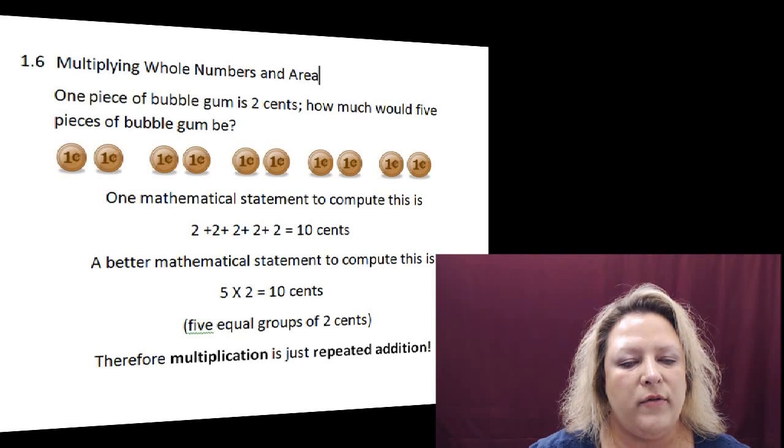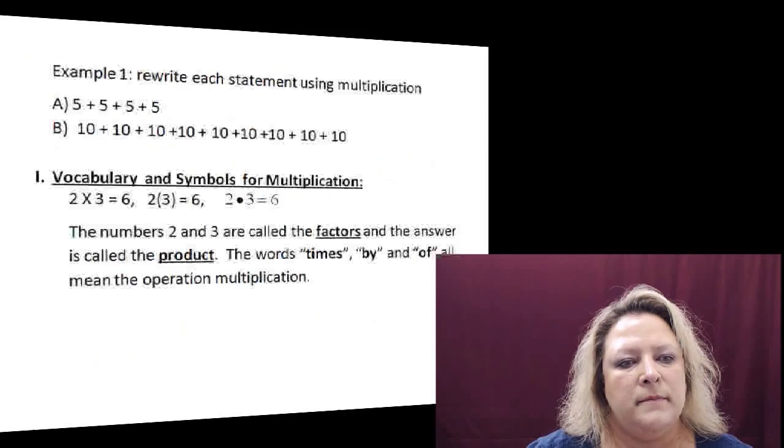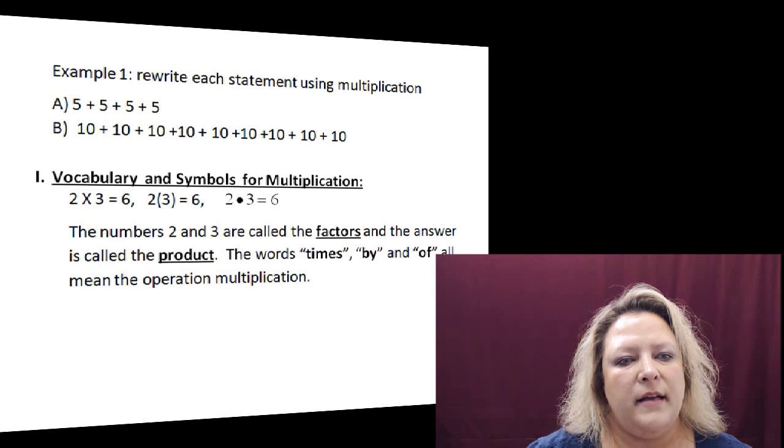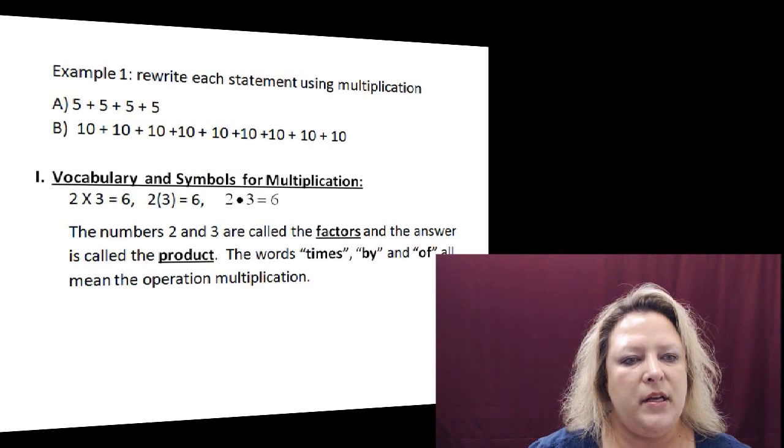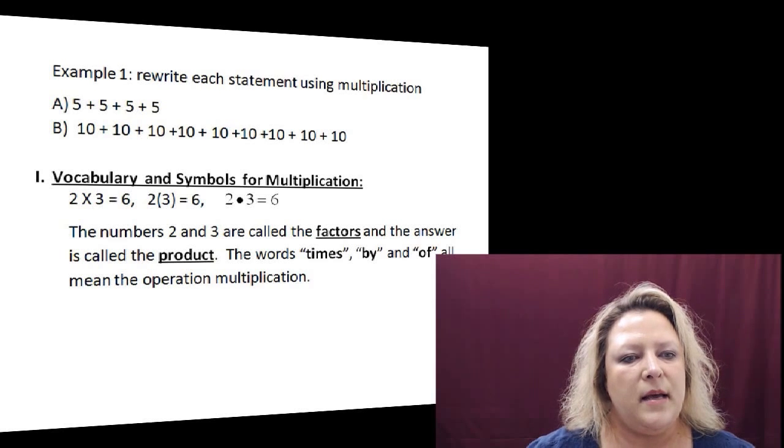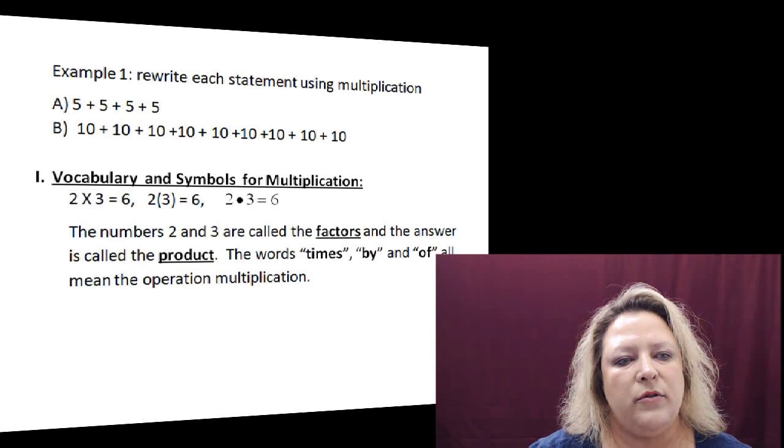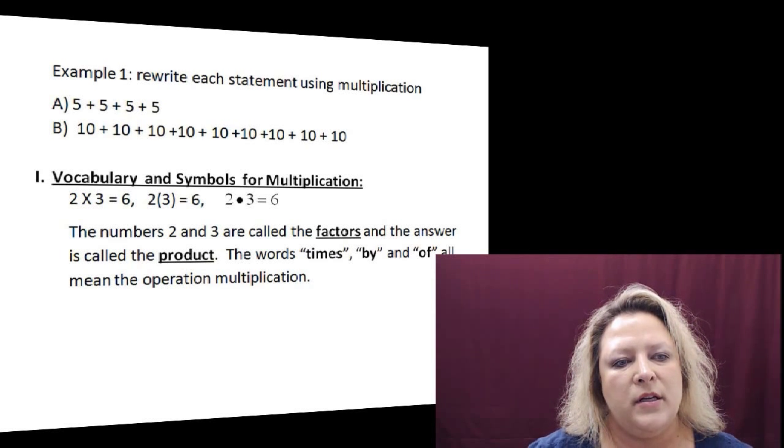On this next slide, if it says to rewrite each statement using multiplication, in step A there are four fives, so that would be 4 × 5. And in the next group, there are nine groups of ten, which would be 9 × 10.